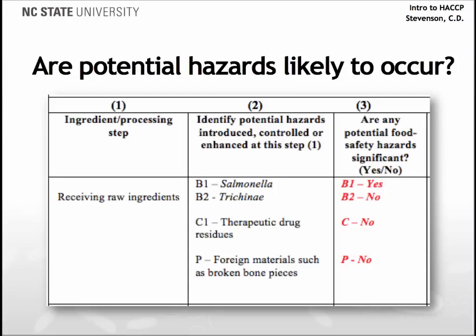Trichinae, on the other hand, is unlikely to occur because the plant is buying from a Trichinae-free certified production facility. Also, the presence of therapeutic drug residues is unlikely to occur because of government screening procedures that look for these residues. Raw meat ingredients come to us from a HACCP-regulated plant which has metal detection in its HACCP plan. To complete the form, we note the answers to the question of reasonable likelihood of occurrence. We will need to justify the decisions we make at this step. Be sure to note the presence and location of any prerequisite program that impacts your decision.